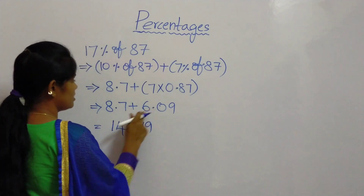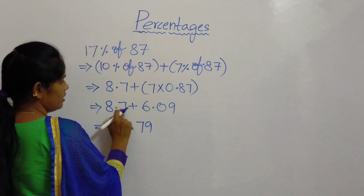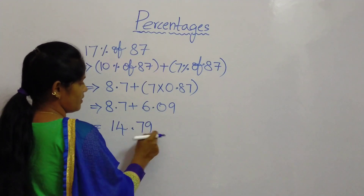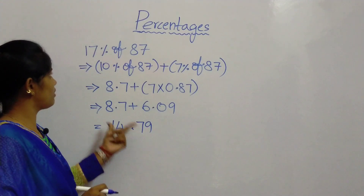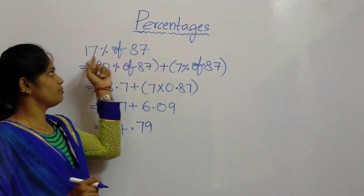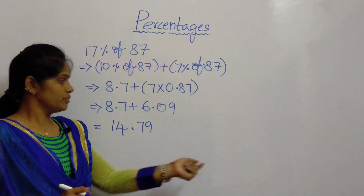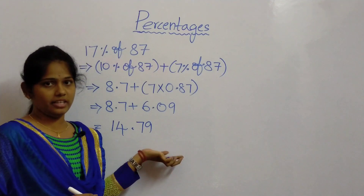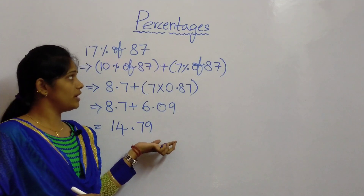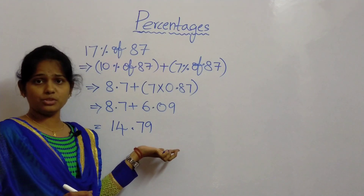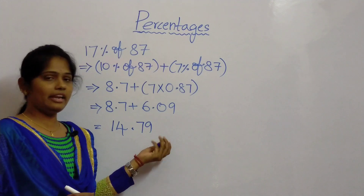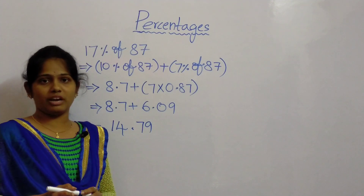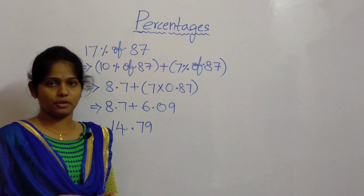So the added value of 8.7 and 6.09 is 14.79. This is the resultant value of 17 percentage of 87. So this is the simple trick we use for finding the percentage of any number. Thank you for watching our video. Please subscribe to our channel. Thank you.